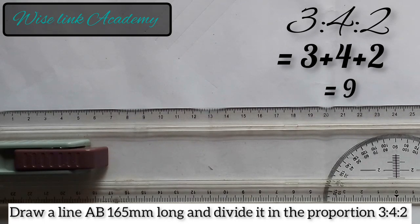So therefore, I am simply dividing that line, that line AB, which is 165mm. I am dividing it into 9 equal parts.